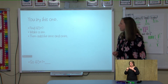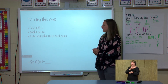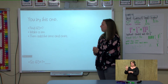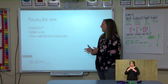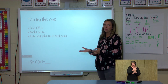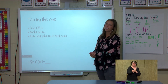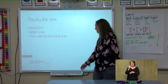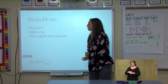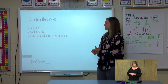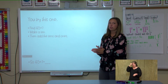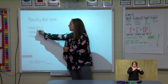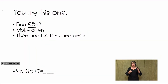You try this one. Find 65 plus 7. Try to make your 10 and then add your tens and ones together. I didn't draw it out, so you need to draw out this one. Remember, when you're drawing out your rods and cubes, you've got to look at your two-digit number to see what's in the tens place and what's in the ones place.